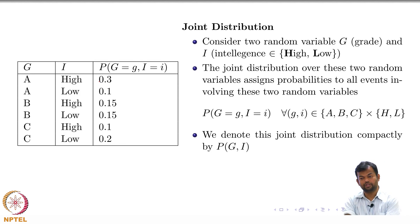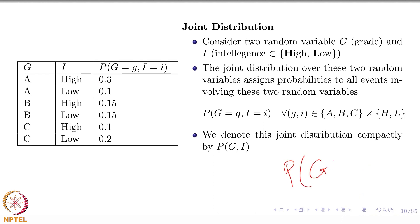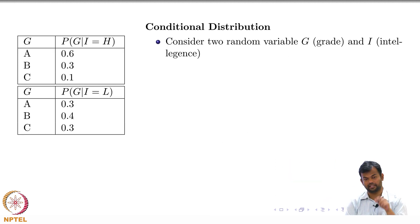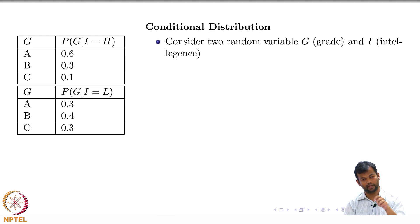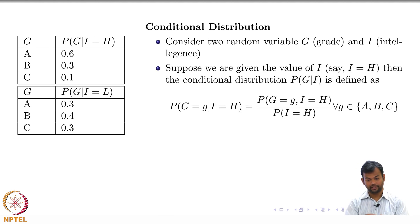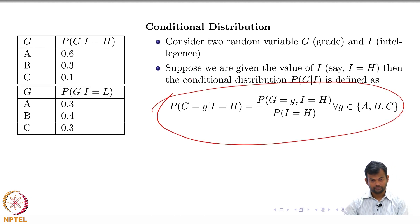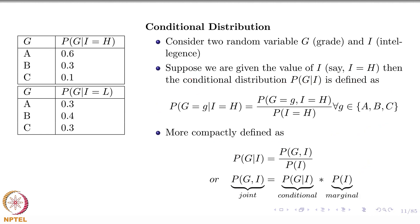What is a conditional distribution? If I ask for P(G | I), assuming G can take 3 values and I can take 2 values, I need 6 values — the same count as the joint distribution. You give two tables: given I equals high, the probabilities for G equals A, B, C; and given I equals low, the probabilities for G equals A, B, C. The conditional distribution equals the joint distribution divided by the marginal distribution, connecting all these concepts.